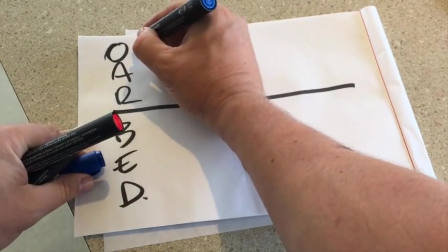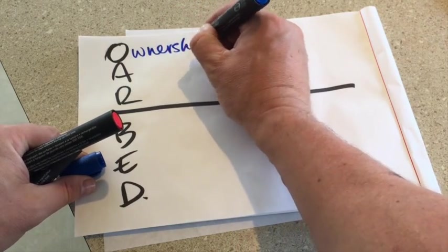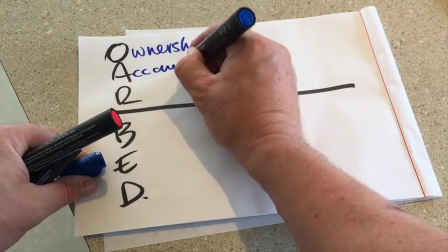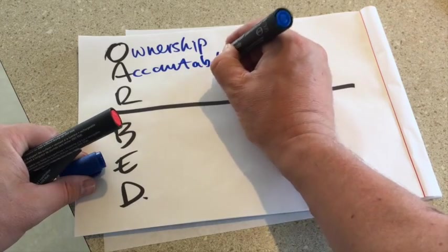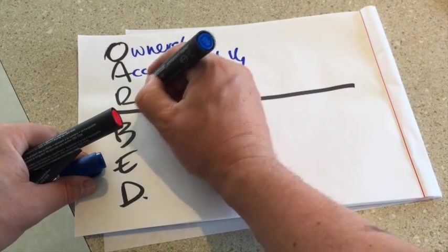So of course, above the line behavior is where you've got ownership, accountability, and excuse my writing, and responsibility.